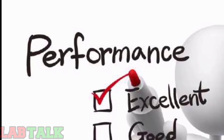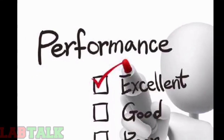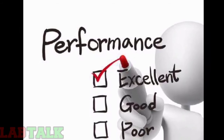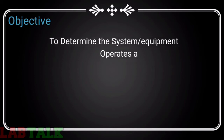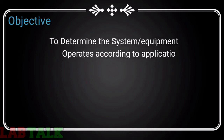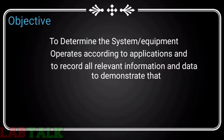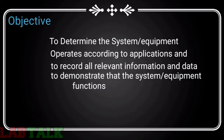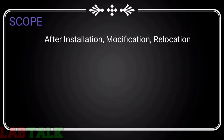Now we will see how to perform OQ and what should be included in it. The objective is to determine that the system or equipment operates according to specification and to record all relevant information and data to demonstrate the system functions as expected. The scope is to perform OQ after installation, modification, or relocation, and after installation qualification has been completed.